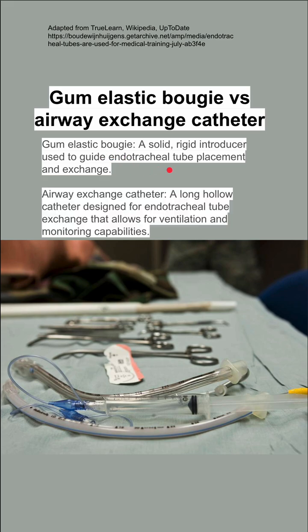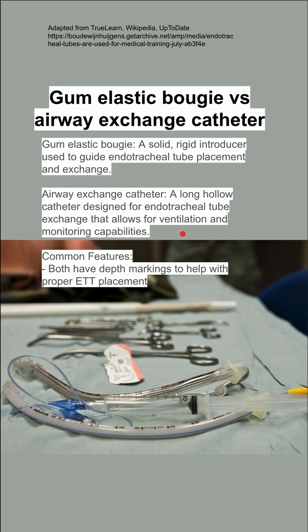The airway exchange catheter is similar but it's hollow — it's a long hollow catheter designed for endotracheal tube exchange that allows for ventilation and monitoring during that exchange. They have some common features: they both have depth markings to help with proper placement, so you want to make sure you're deep enough and in the right position.